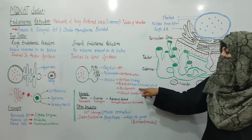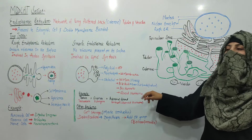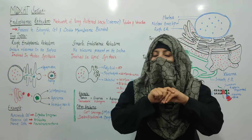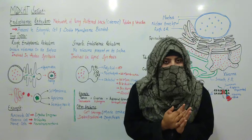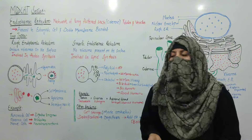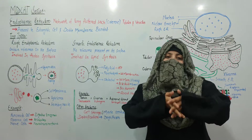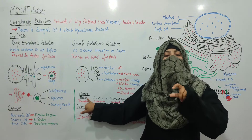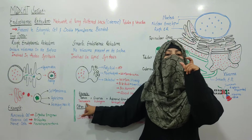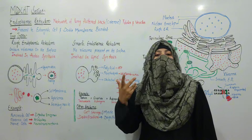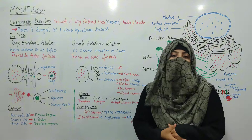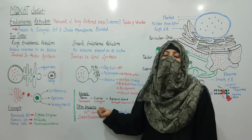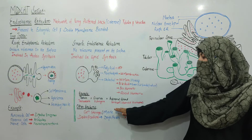We also create bile acids in the liver which work in emulsification — when fats are dissolved in water. After that, the smooth ER is involved in the production of sex hormones and steroid hormones. For example, the testes use smooth endoplasmic reticulum to produce testosterone, which is a male sex hormone. The ovaries release estrogen, a female sex hormone. The adrenal gland also produces steroid hormones using smooth ER.